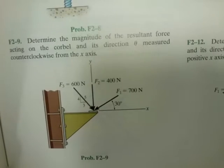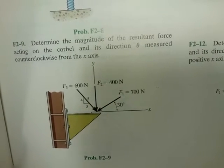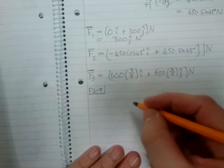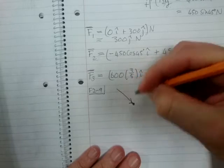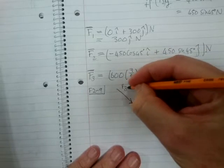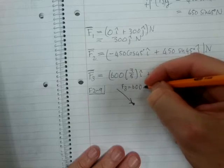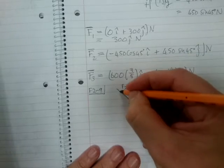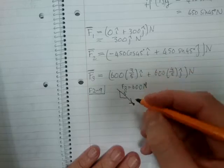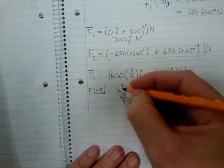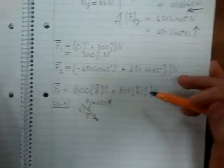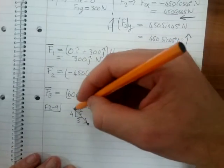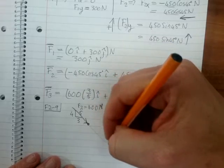F2-9, I'm just going to take the one that says F3 equals 600 Newton, and we have 5, 3, and 4, that's the triangle. So what you need to see with this type of problem is that this force acts everywhere along this line.